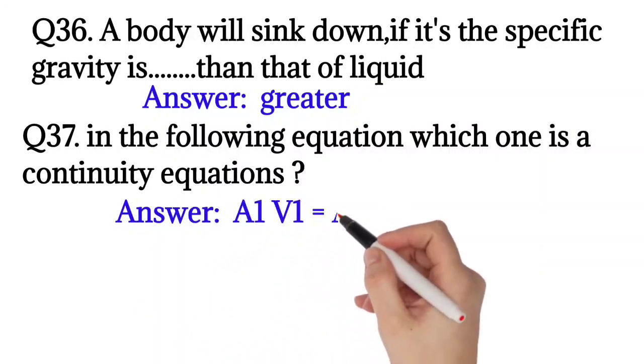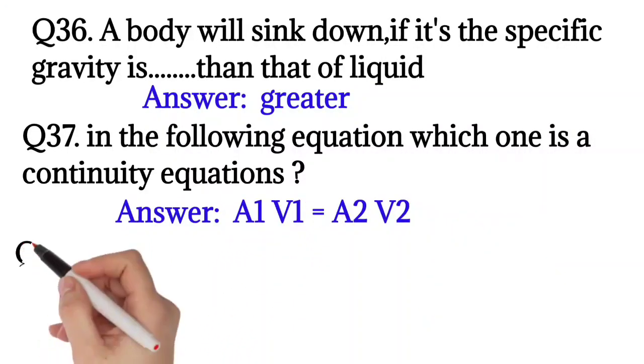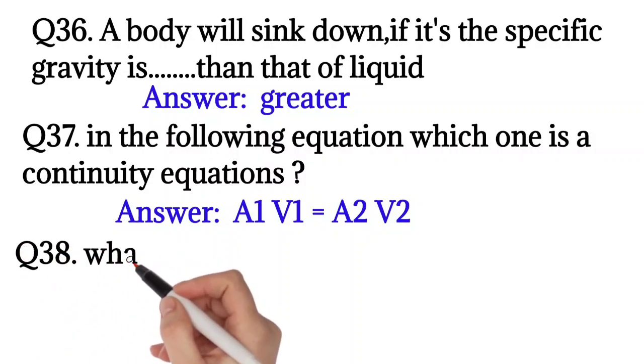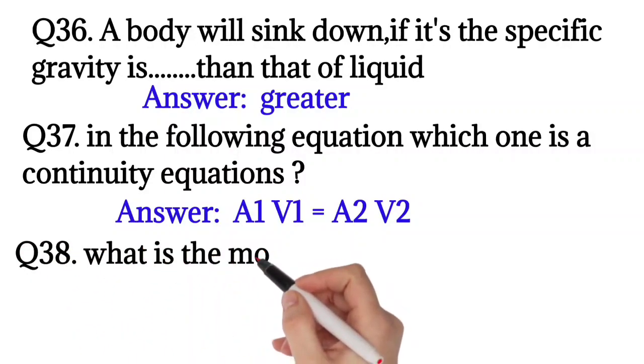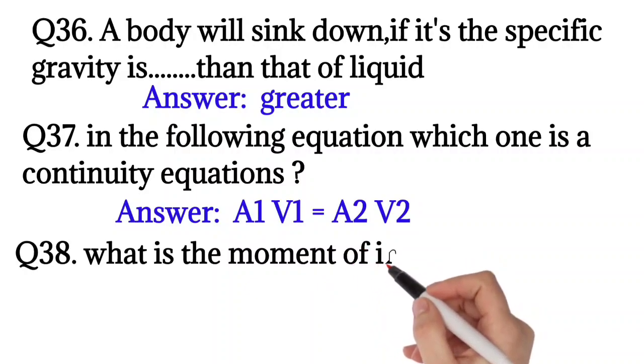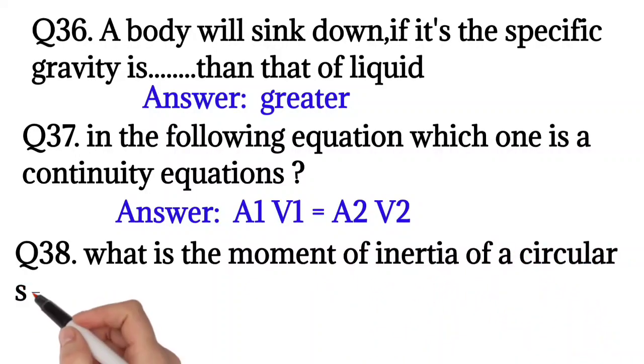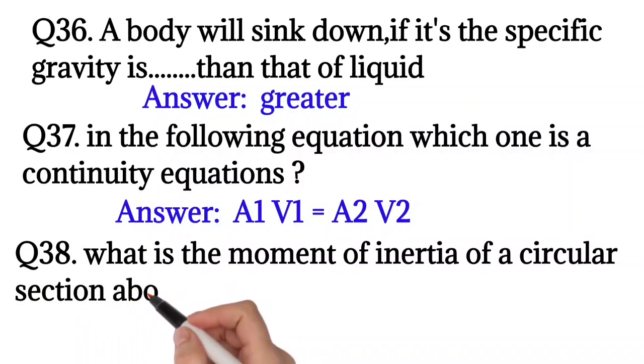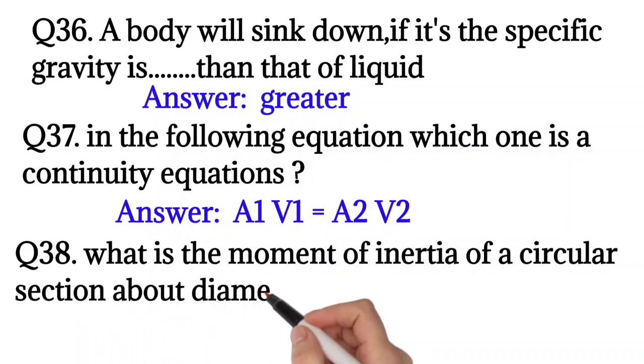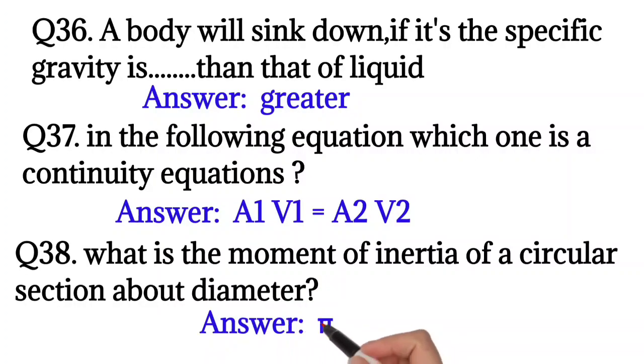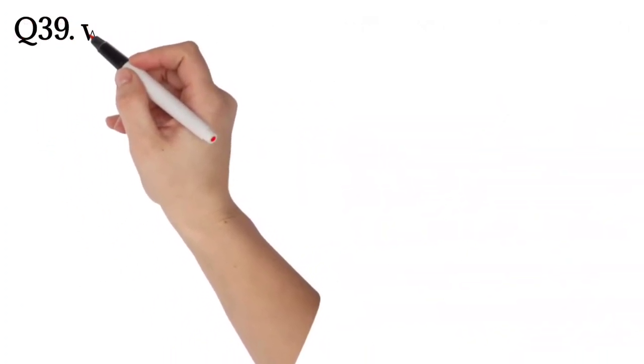The answer is A1V1 equals A2V2. Question number 38: What is the moment of inertia of a circular section about a diameter? The answer is pi d squared divided by 64.